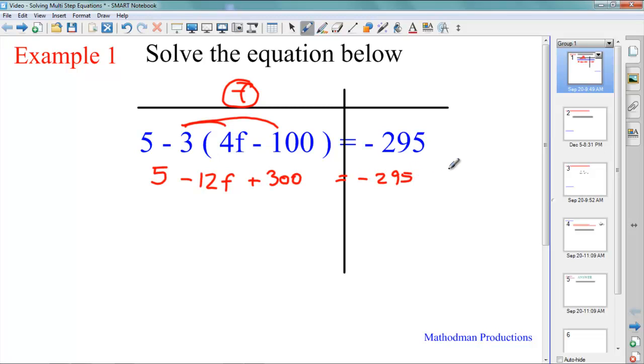So this second line is way simpler and shorter than what I began with, but there is still some ways that I can make it even shorter. Concentrating on the left, if you look, there are two terms that are alike. This 5 and this 300. So combine like terms, 305 minus 12F equals negative 295.